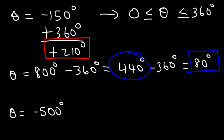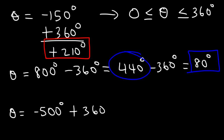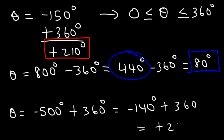For negative 500: because negative 500 is less than 0, we want to add 360. Negative 500 plus 360 is negative 140, which is still not in the range. Even though negative 140 and negative 500 are coterminal angles — they differ by 360 — we need to add 360 again. This gives us positive 220 degrees, so that is the coterminal angle we're looking for.